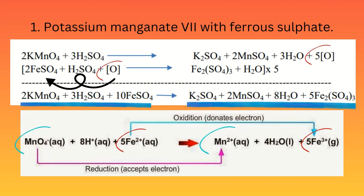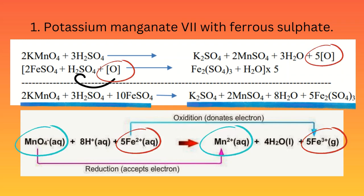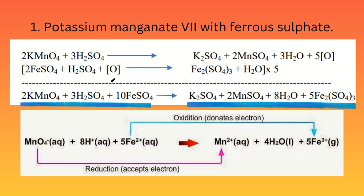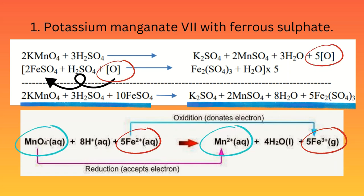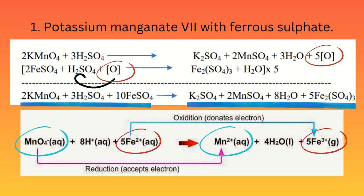Reaction 1: Reaction of potassium permanganate with ferrous sulfate in the presence of acid H2SO4. In this reaction, ferrous sulfate reacts with potassium permanganate in the presence of sulfuric acid. Nascent oxygen is produced, which reacts with ferrous sulfate and converts it to potassium sulfate, ferric sulfate, manganese sulfate, and water.